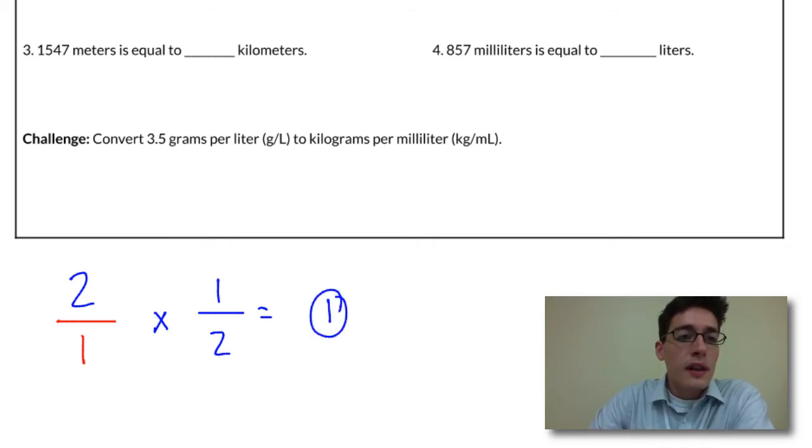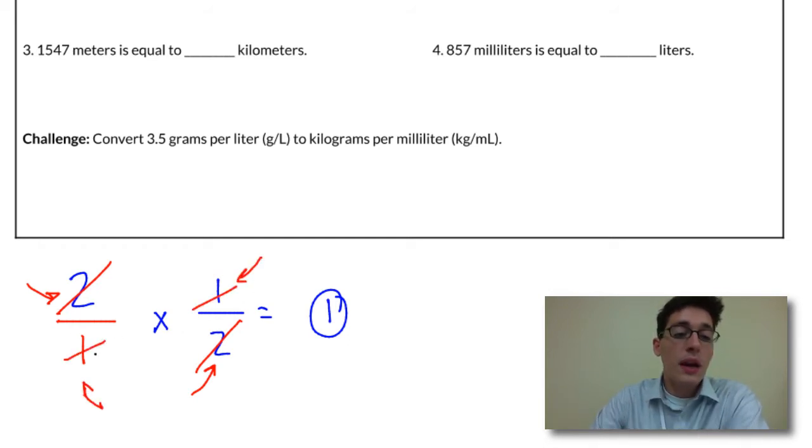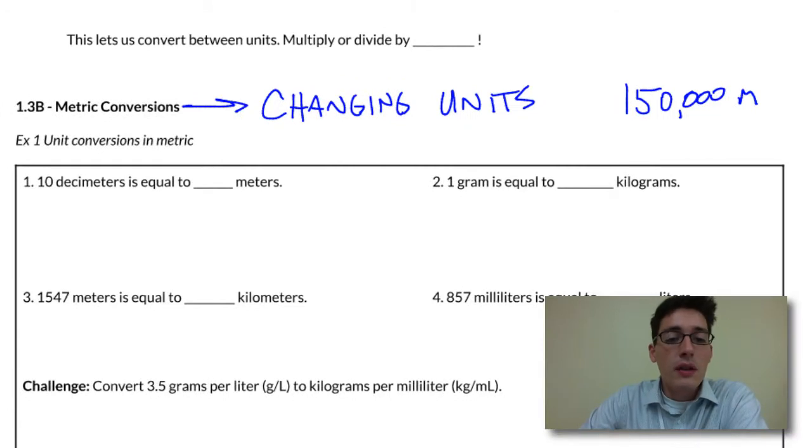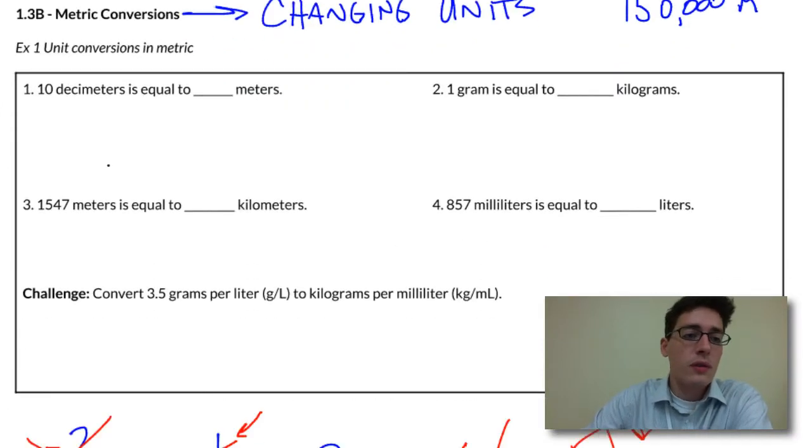And the reason it does that is because we have a 2 in the numerator and a 2 in the denominator. And when you have that, these numbers or the units or whatever would cancel each other out. And the same thing goes for these 1s. When you have pairs, partners opposite like that, it cancels out into a value of 1. So let's take a look at some examples here. We're going to bounce back and forth between this and the number line.